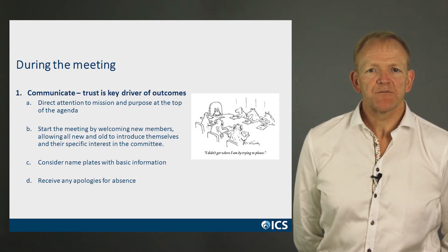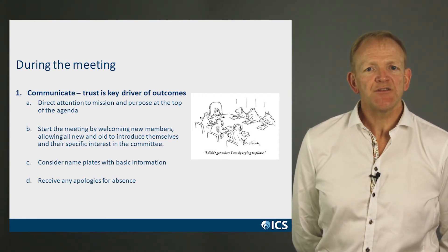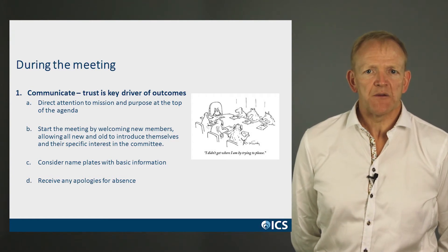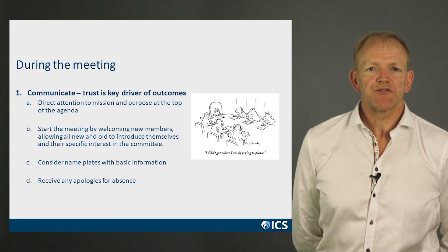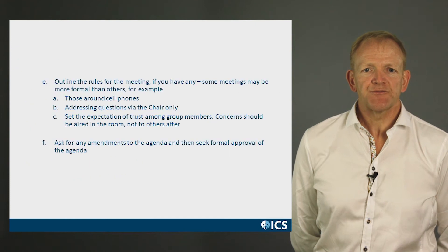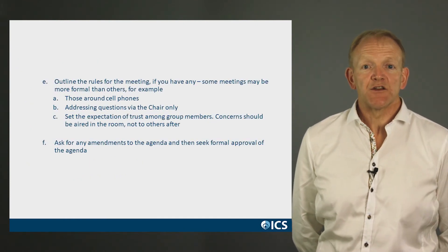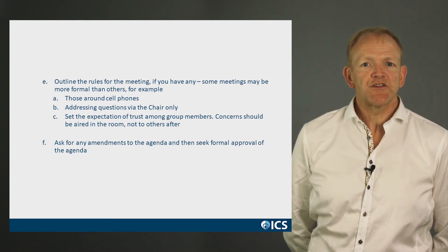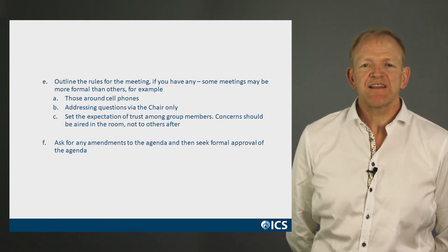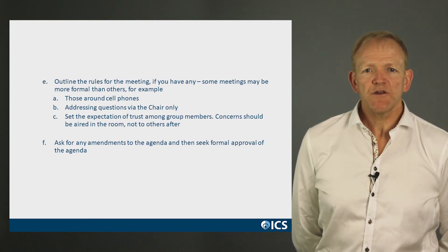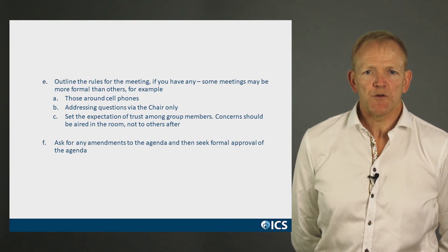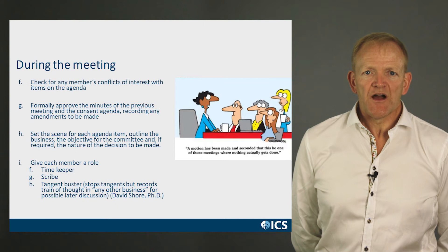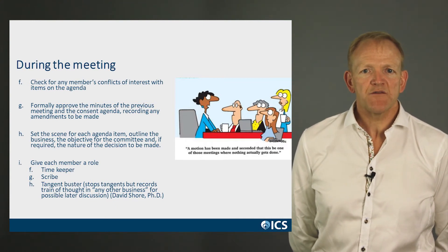Welcome new members to the meeting, allow them to introduce themselves and their interests, then ask existing members to do the same. You might like to ask the office to provide name labels. Receive any apologies for absence. Outline the rules of fair play for the meeting, including cell phones. Try to ensure that everyone feels equally able to express themselves. Check for any members' conflicts of interest with items on the agenda. Formally approve the minutes of the previous meeting and the agenda, recording any amendments to be made.